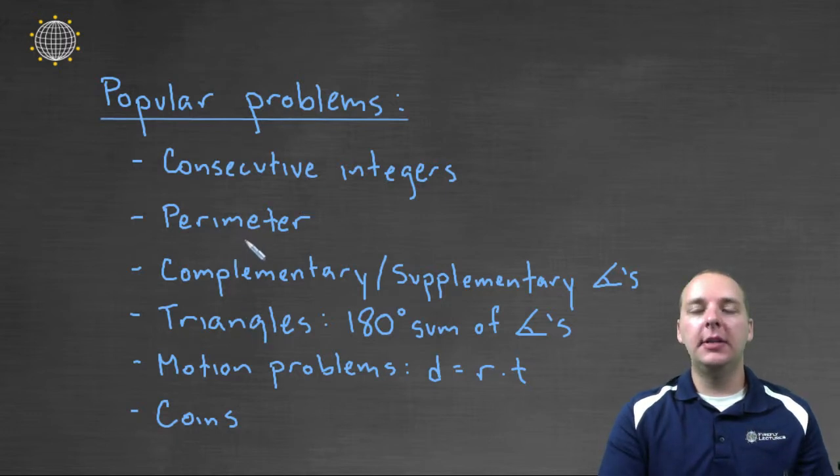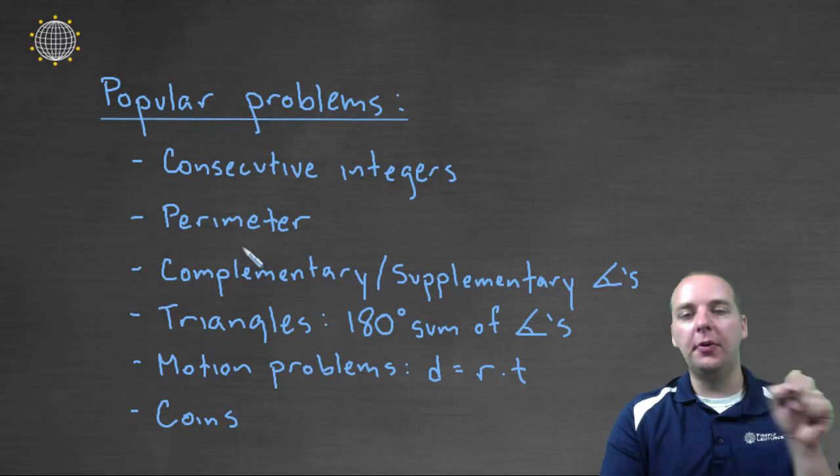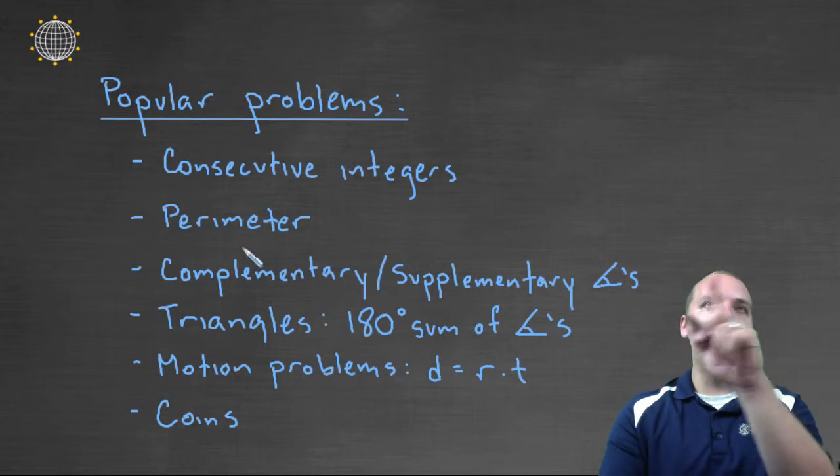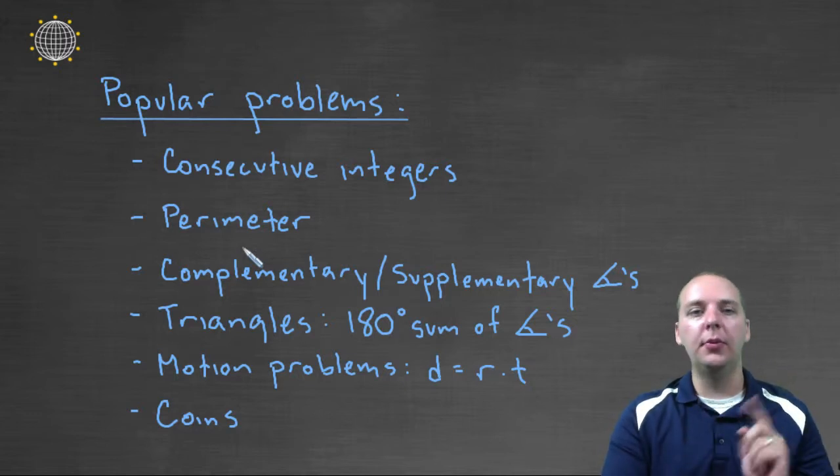We have a lot of problems dealing with the perimeter of various shapes, like the perimeter of a rectangle or a room. Maybe you're going to put crown molding in a room or baseboards in a room or something like that, and it'll talk about the perimeter of the room.